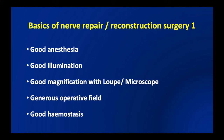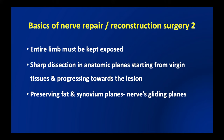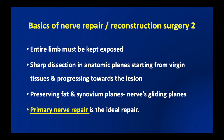Before going into the techniques of nerve repair, we need to understand the basics required in all these surgeries: good anesthesia, good illumination, good magnification with a loupe during dissection and a microscope during actual repair, a generous operative field with good exposure and hemostasis. The entire limb must be kept exposed during surgery to check passive range of movements. Sharp dissection in anatomic planes should start from virgin tissues progressing toward the lesion, and it is important to preserve the fat and synovium planes, which are the nerve's gliding planes.